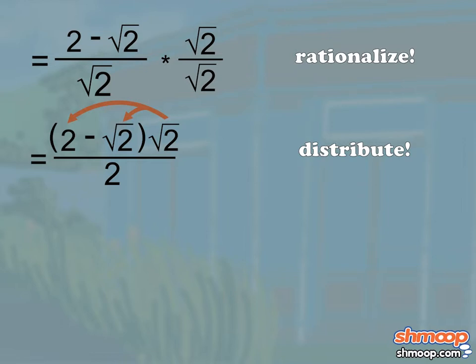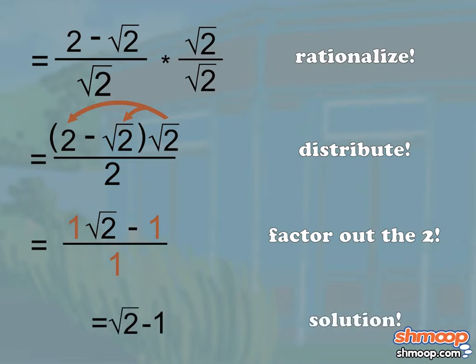let's distribute the root two across the quantity two minus root two to get two root two minus two all divided by two. Since we have a two on top and a two on the bottom, they cancel each other out, so our final quantity is root two minus one.